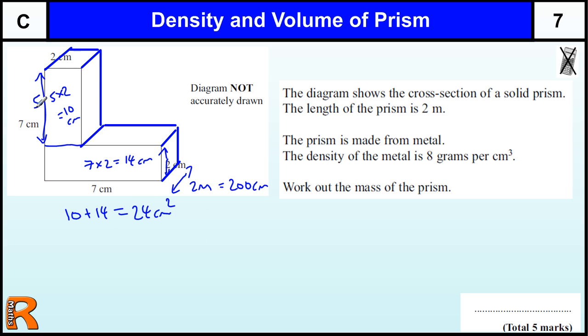Now for a prism, if you take the end, the cross-section, and multiply by how long it is, that gives you its volume. So 24 times by 2 metres, which is 200 centimetres, times by 200. Two 24s is 48, and then we've got two zeros on the end, so 4,800 centimetres cubed would be the volume.